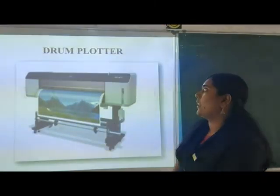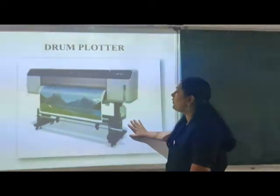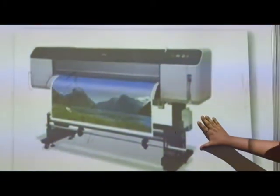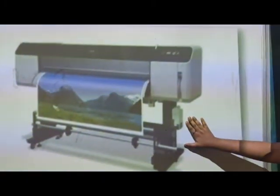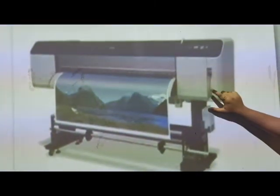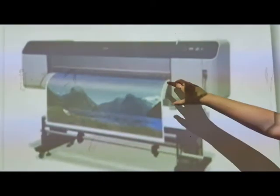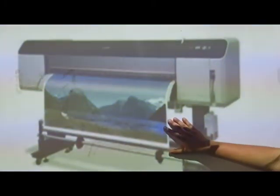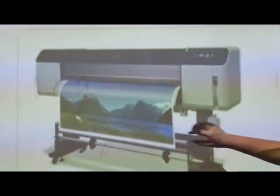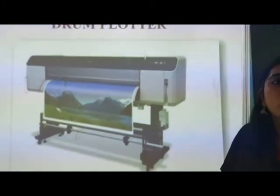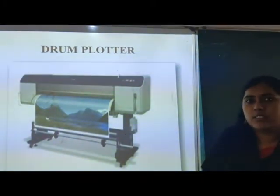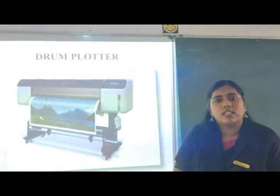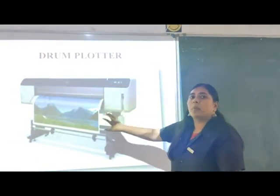Our next output device is a plotter. Have you seen this device? This is called a plotter. Plotters were the first printing devices which we used. Here, can you see a drum? It is called a drum plotter, because we are placing papers into these drums to get our output. These plotters are mainly used for printing flexes — the large advertisements we can see on roads for many companies, textile shops, etc.